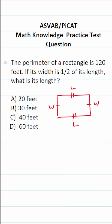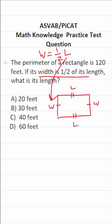We're given this piece of information that's going to prompt us to make a modification to our rectangle. It says the width, w, is equal to half of its length. So algebraically, w equals one half of its length. Wherever I see width in this diagram, I'm going to replace it with one half of its length.